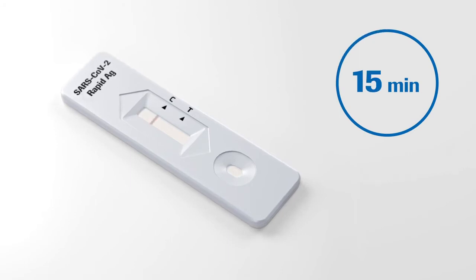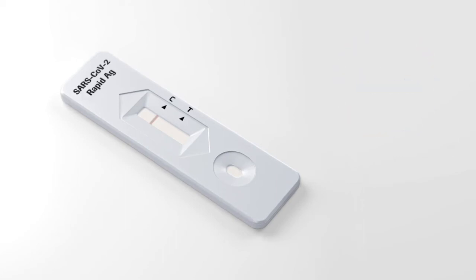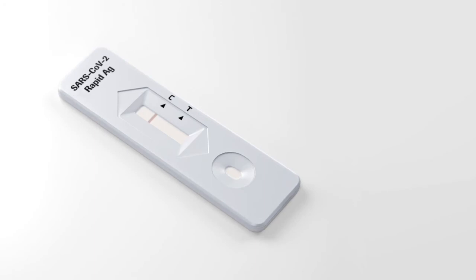In the top section of the result window, a colored line appears to show that the test is working properly. This is the control line C. Even if the control line is faint or not uniform, the test should be considered to have performed properly.